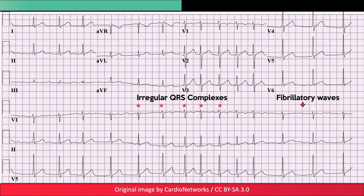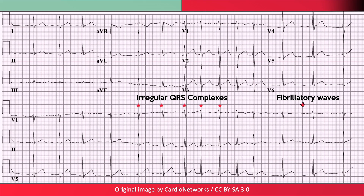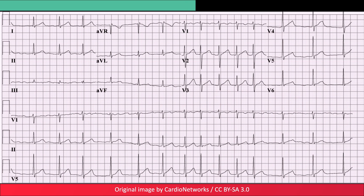The rate of the atrial fibrillatory waves can be extremely high — over 700 per minute. Thankfully, not all of these impulses are conducted to the ventricles. Nonetheless, a very fast heart rate can result when even a third of these impulses result in ventricular depolarization.